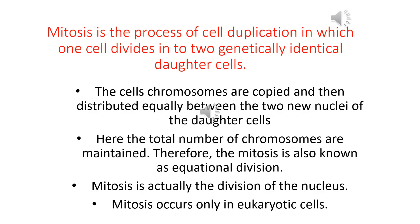So what is mitosis? Mitosis is the process of cell duplication in which one cell divides into two genetically identical daughter cells. One cell is getting divided into exactly the same identical daughter cells. The cell's chromosomes are copied and then distributed equally between the two new nuclei of the daughter cells. The total number of chromosomes are maintained — they are not at all changing. Therefore mitosis is also known as equational division.